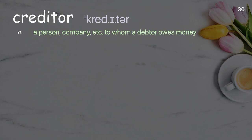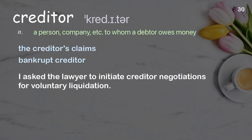Creditor: A person, company, etc. to whom a debtor owes money. Examples: The creditor's claims, bankrupt creditor. I asked the lawyer to initiate creditor negotiations for voluntary liquidation.